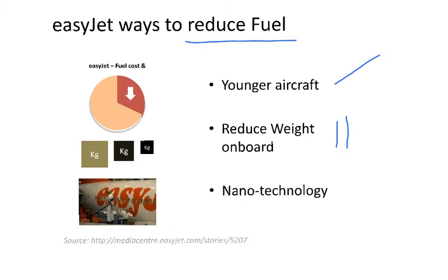There are different ways to reduce weight, but one example airlines have been using is charging for baggage. By charging for luggage, passengers are more sensitive to that price and may be willing to bring one less bag on board, therefore reducing weight and cost. Another way EasyJet has been trying to reduce fuel is by using nanotechnology. Basically, as we see in the picture, what EasyJet has done on some planes is to polish the aircraft so finely that air resistance is reduced, achieving again some reduction in fuel.